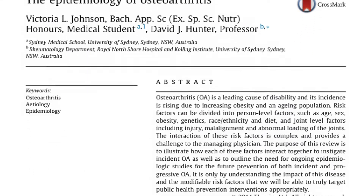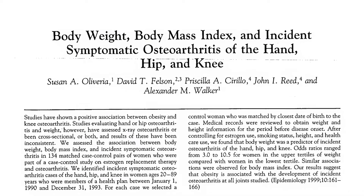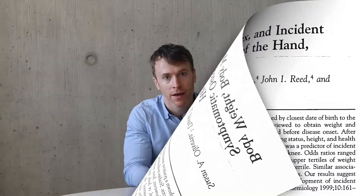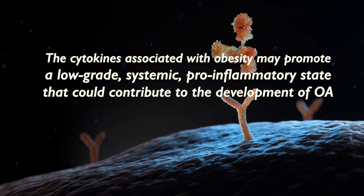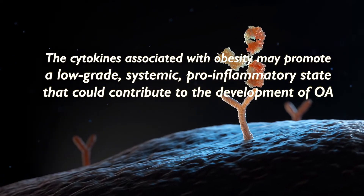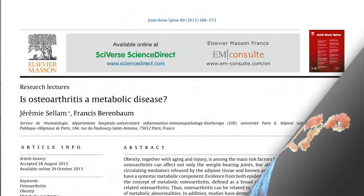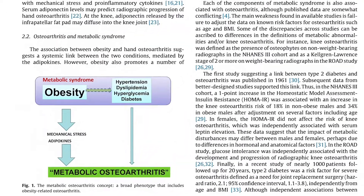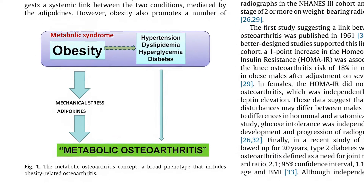Macrophages within adipose tissue are a source of pro-inflammatory cytokines, including interleukin-6 and tumour necrosis factor alpha. The cytokines associated with obesity may promote a low-grade systemic pro-inflammatory state that could contribute to the development of OA, while leptin — a hormone produced by fat cells that regulates appetite and fat storage — has been proposed to have direct effects on joint tissues that promote OA development.